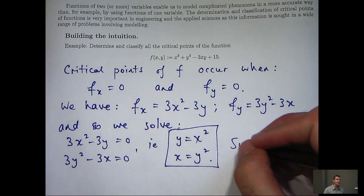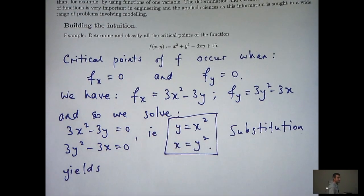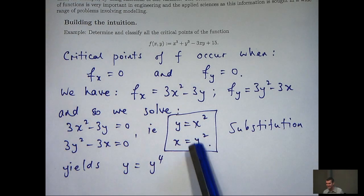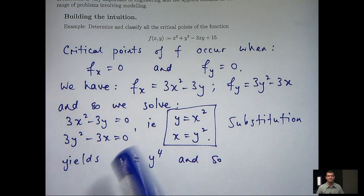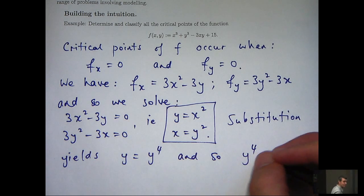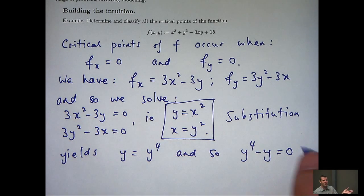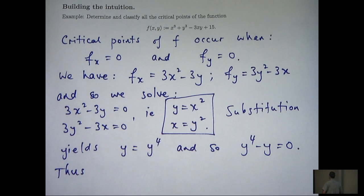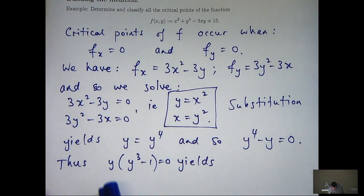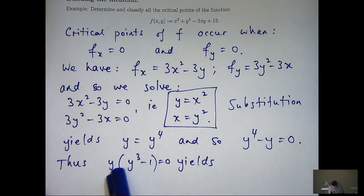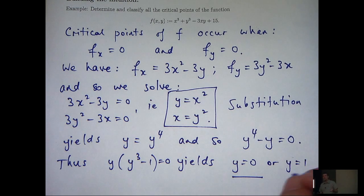I can take this x and substitute it into the first equation, so I'll get y equals y to the power of 4, just by substituting this in for x here. And so what I can do is rearrange this and form the following. I'm going to take out a common factor of y.